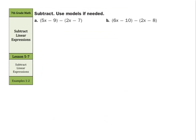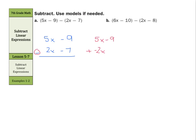Now, subtract — use models if needed. Let's set this up in columns here. If we have our 5x minus 9, and we're going to subtract the entire 2x minus 7. One way of doing this is to change our subtraction to addition. We'll keep the 5x minus 9. And just like with integers, when we keep change opposite, we're keeping the top group. We changed our subtraction to addition, and now we're going to have to change the 2x and the negative 7 into opposites.